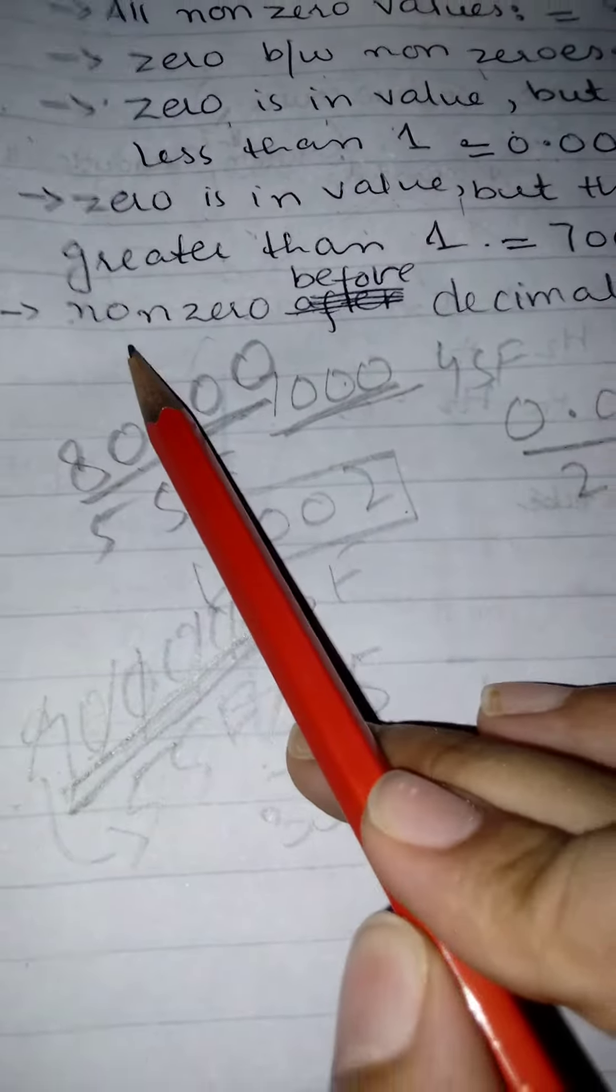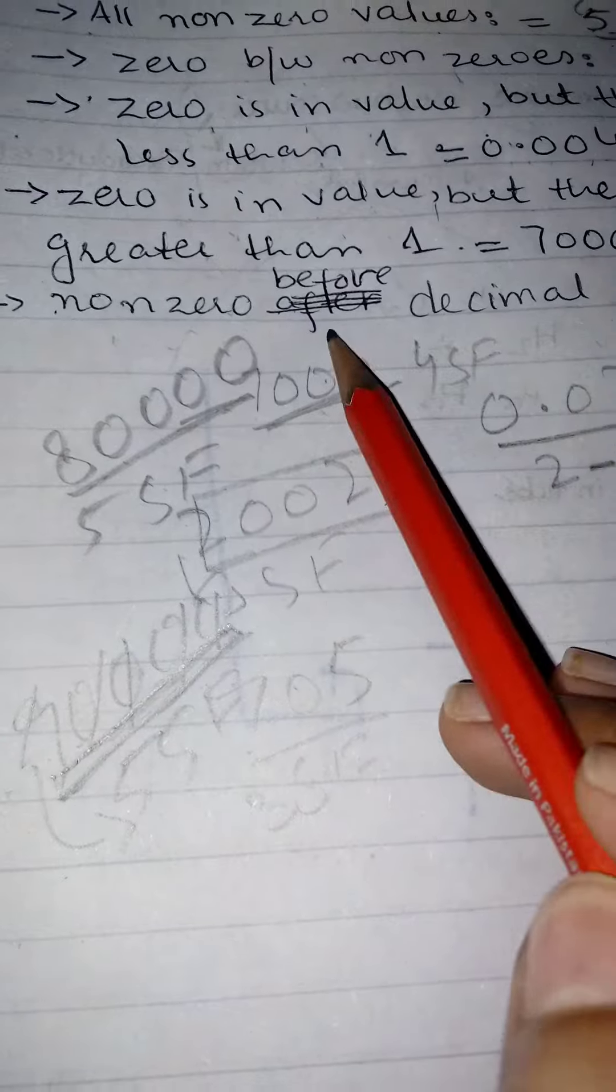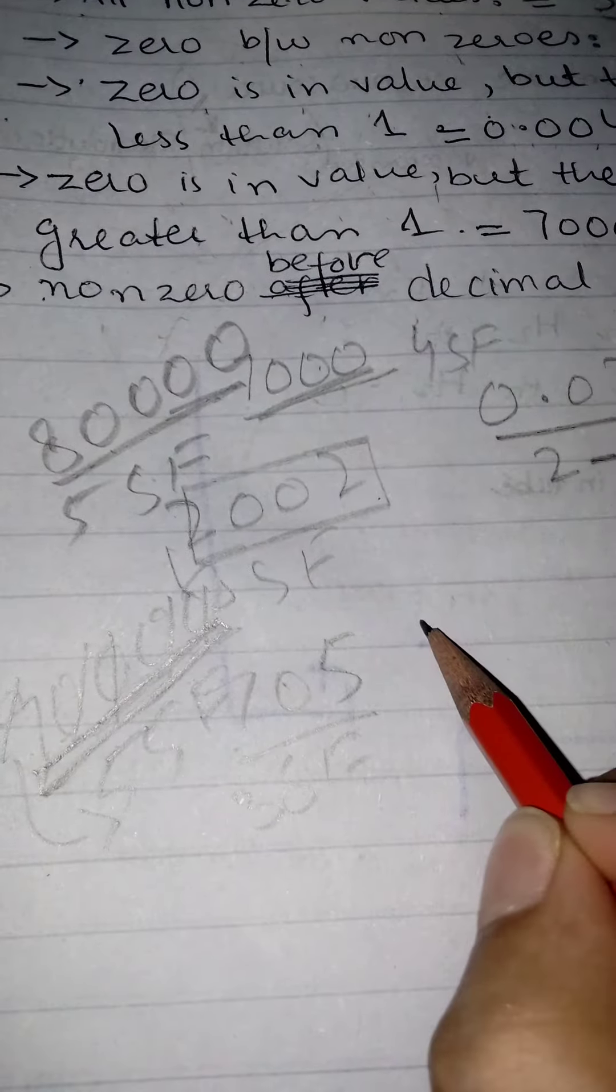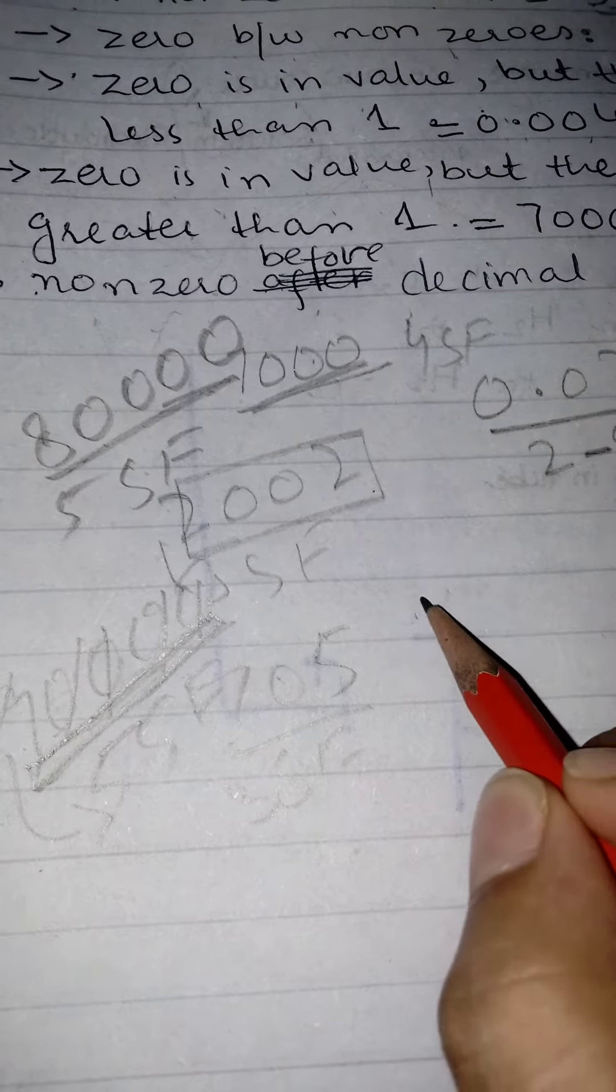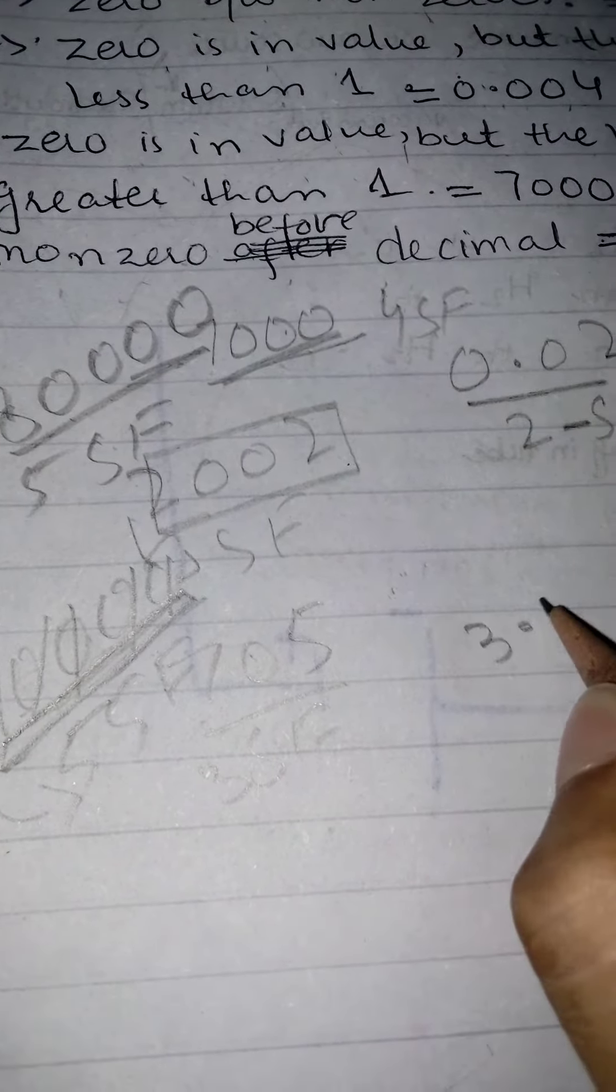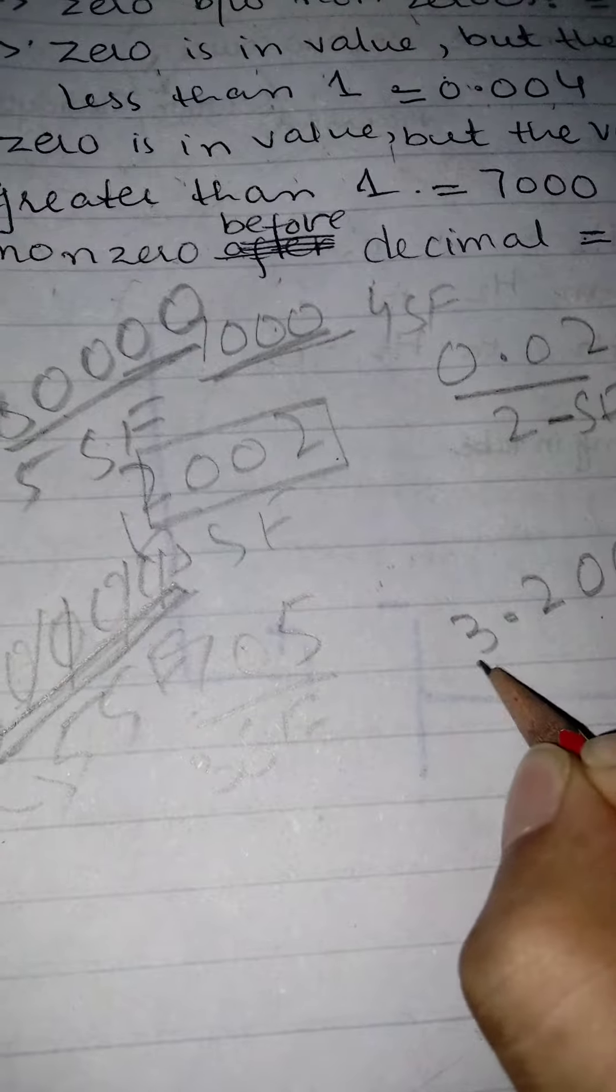Five significant figures in this number. Then we have the fifth rule: non-zero before decimal point. This means that if there's a non-zero digit before the decimal point, that is also significant. For example, 3.20 has a non-zero